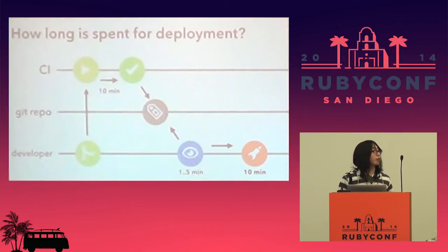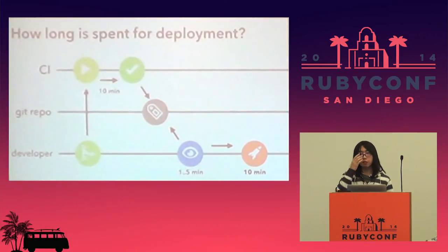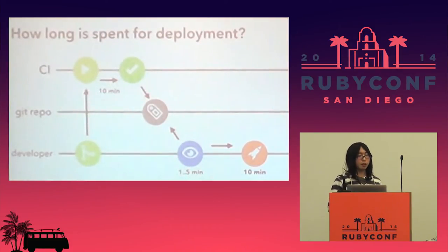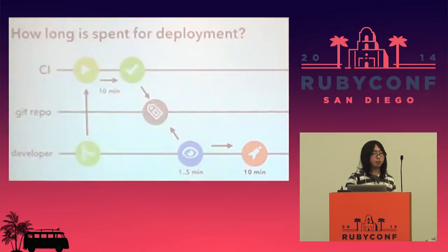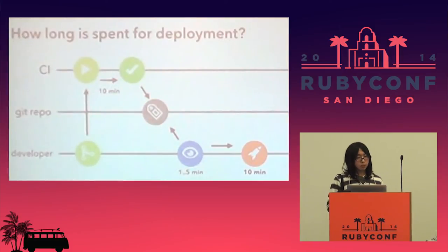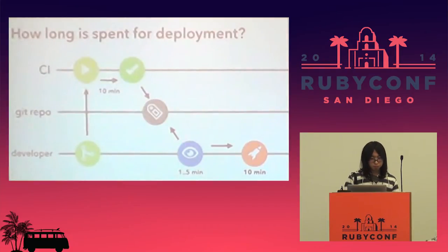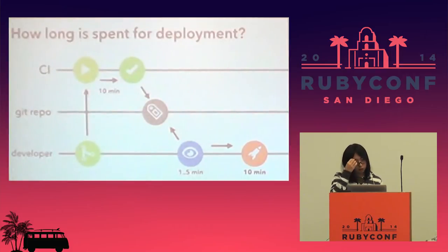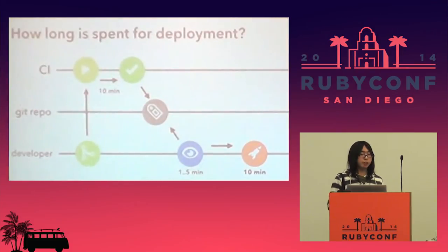Do you see this flow as good? But we have a problem with this flow. It's the time spent for deployment. We run test cases at fastest in about 10 minutes. In order to get that fast, we have to do parallel testing and more hacks to run tests fast, so we can't get much shorter than this because the CI run is at its fastest. Then, the developer takes five minutes to check staging, and finally Capistrano takes over 10 minutes. It's clocked.